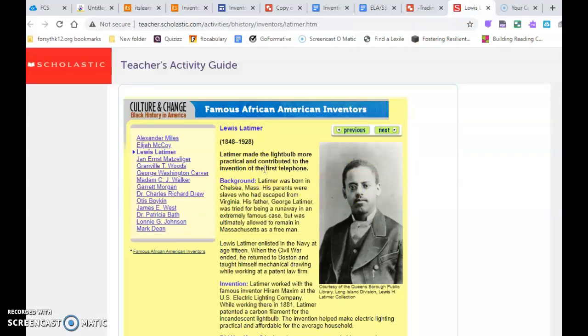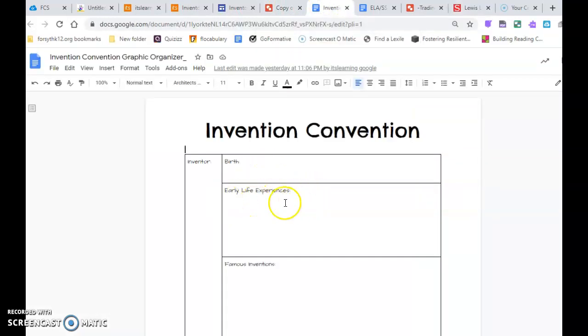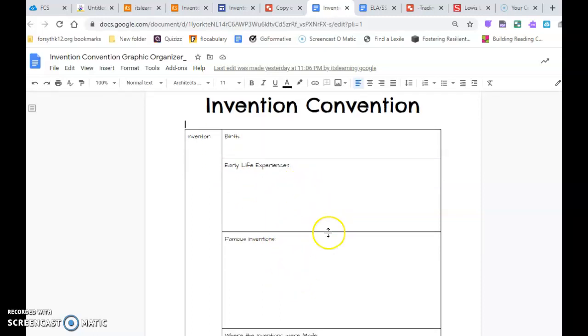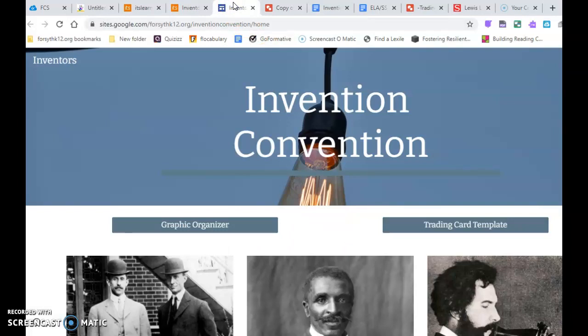But with this, as far as the research, for example, if this were your person that you're studying, for instance, one of the five that you have, Louis Latimer, you have the dates right here. So that's going to be important on your organizer. It said he made the light bulb more practical. So what I want you to do as far as your organizer, when you're taking notes, you can have just bullet points. It doesn't have to be completely, complete sentences on this. You are just finding some information.